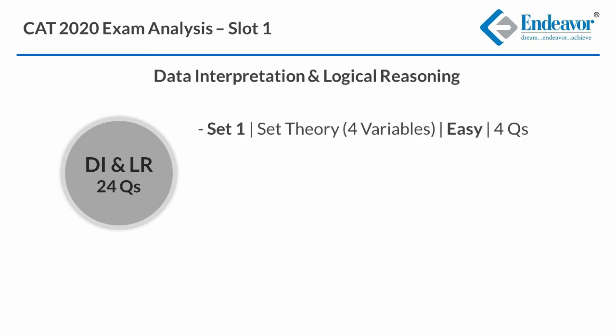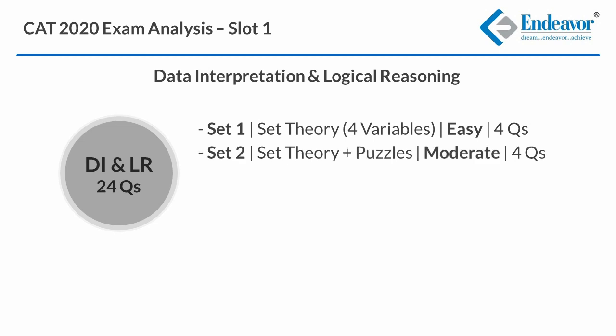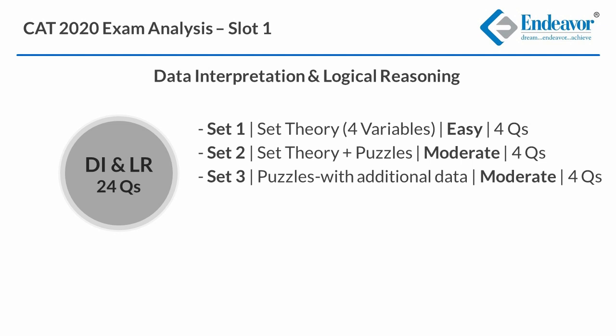The easiest of the sets was the one based on set theory with 4 variables — this can be marked as an easy set. The next set, marked moderate, had set theory plus puzzles data. Both these sets carried 4 questions each. The third set, which also carried 4 questions, was on puzzles with partial data given and each question had additional data. This is the one that had 2 questions on maxima and minima; however, this set can also be marked moderate.